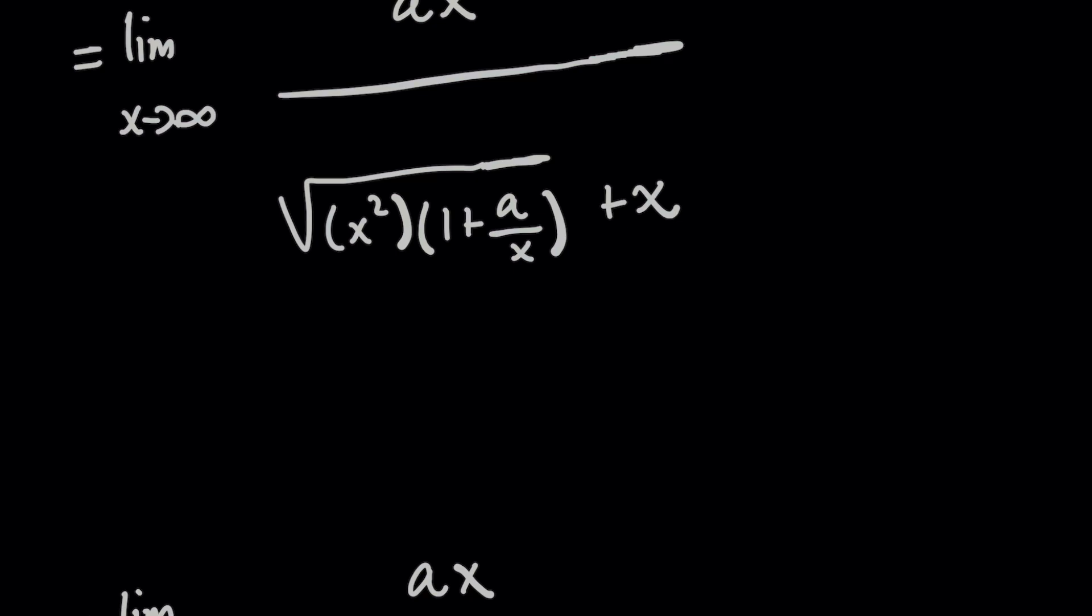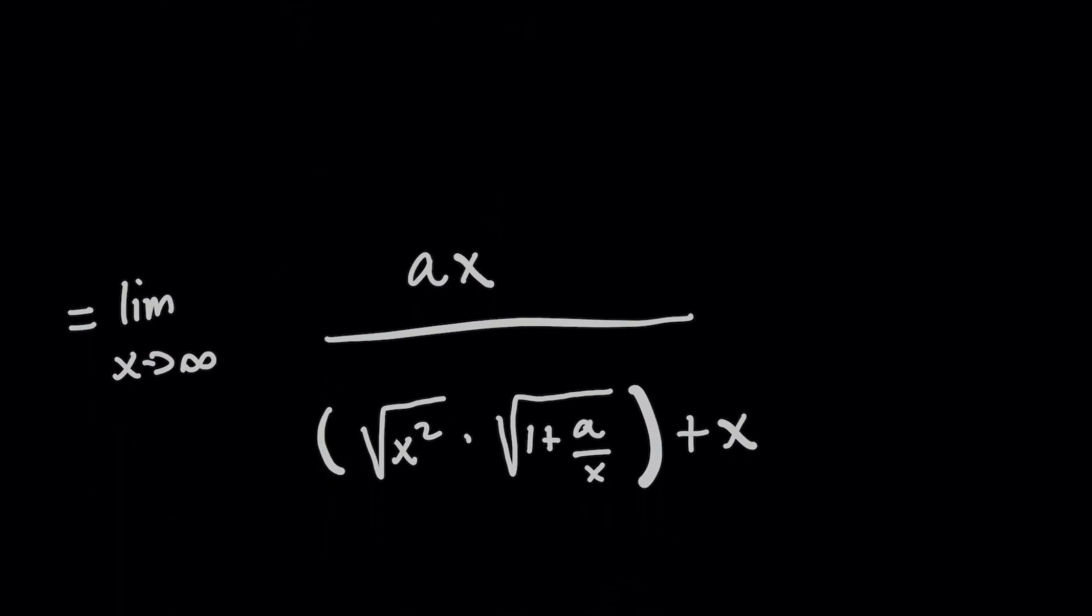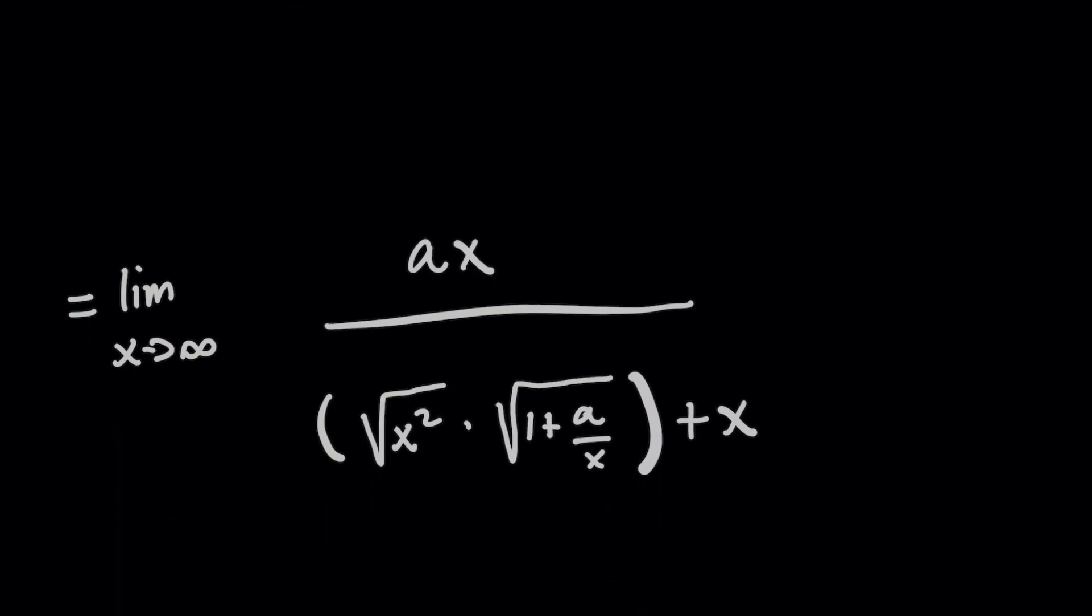The radical of a times b allows you to break this up into two different radicals. So I'm going to split the radical here. And now you've got this x squared as its own separate radical, which is nice, because when you simplify that, we know and we got to be careful, dealing with the sign of x.